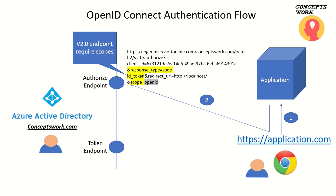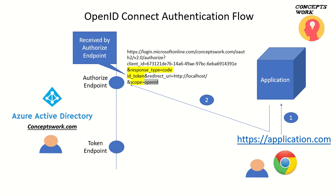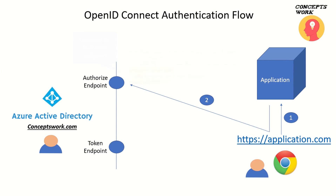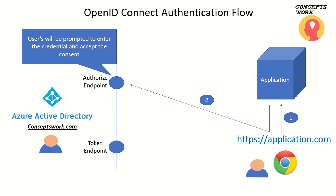This is the first difference you can observe in terms of knowing which protocol is being used by the application. In the scope I have mentioned OpenID, whereas in OAuth 2.0 authorization code flow it was graph.microsoft.com/.default. Once this request is received by the Authorize Endpoint, users are presented with a prompt to type their credentials and accept the consent — the prompt where users must acknowledge allowing a specific application to access a specific set of information.